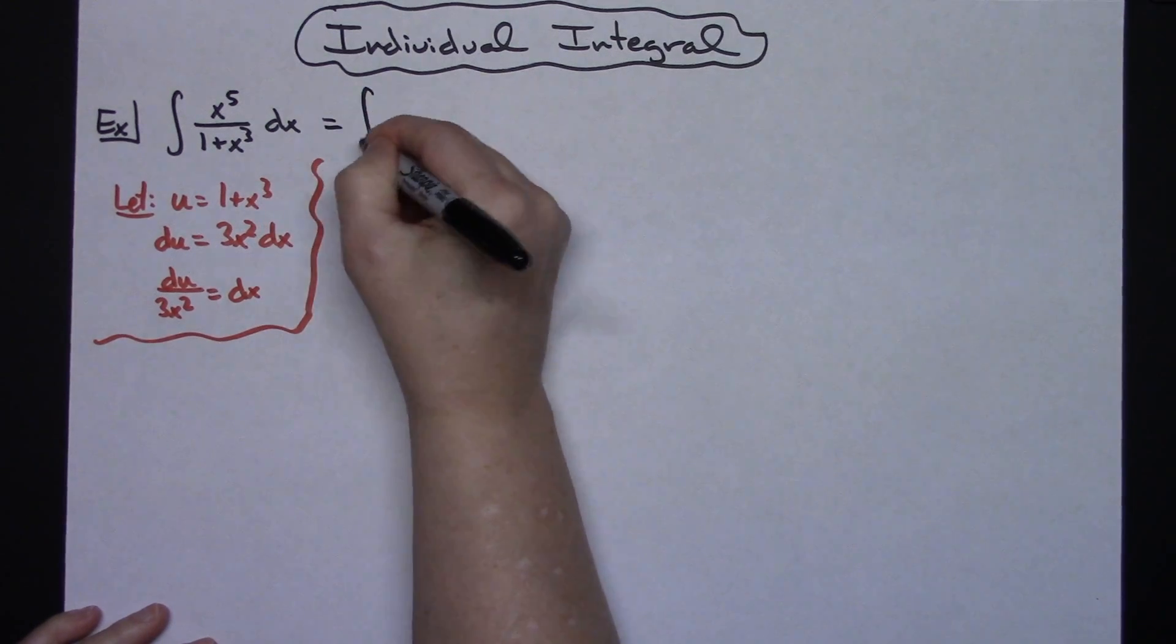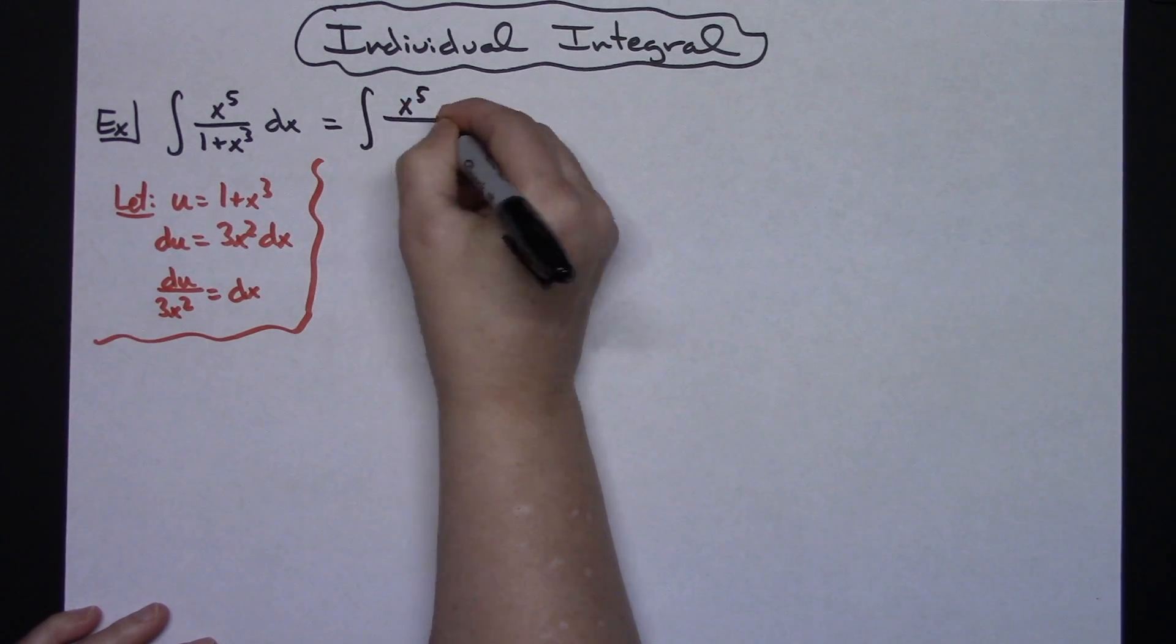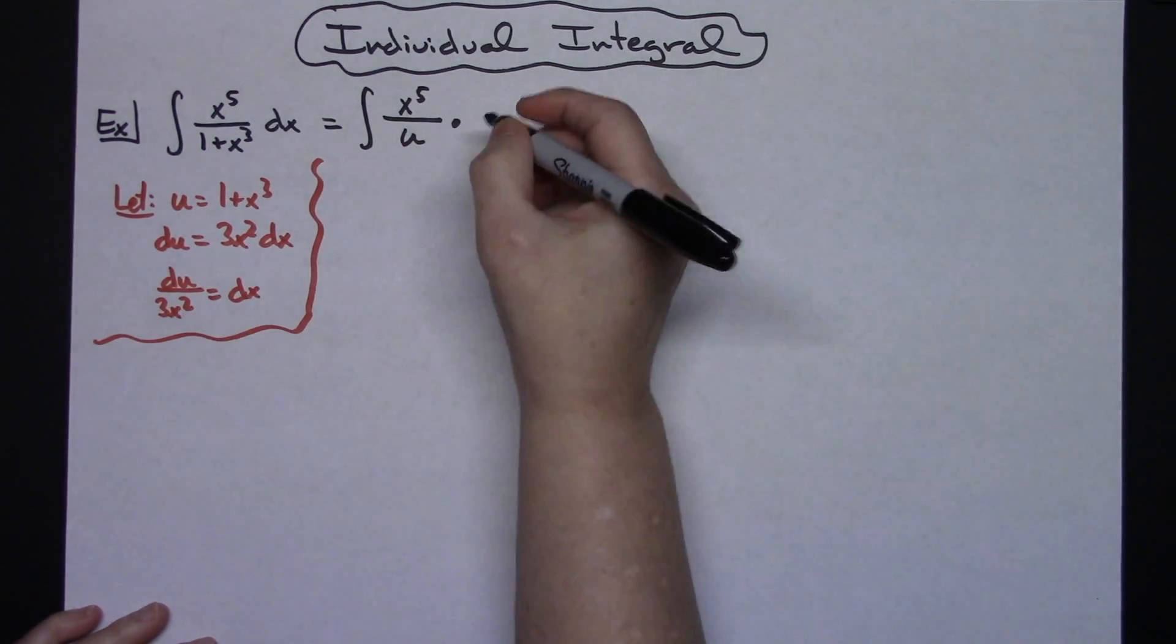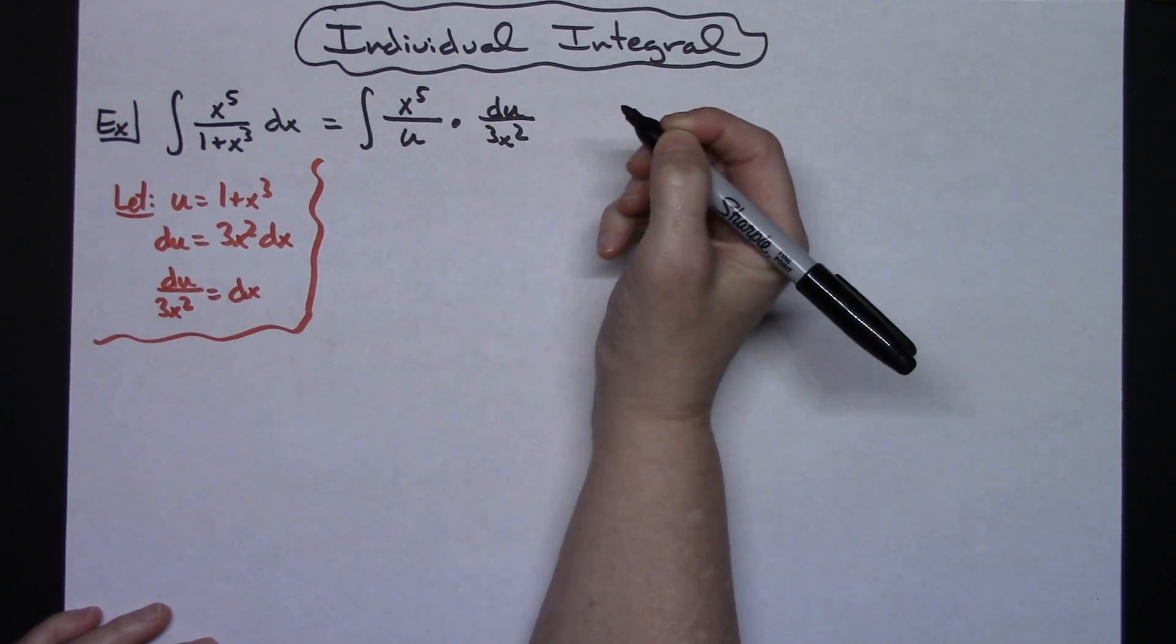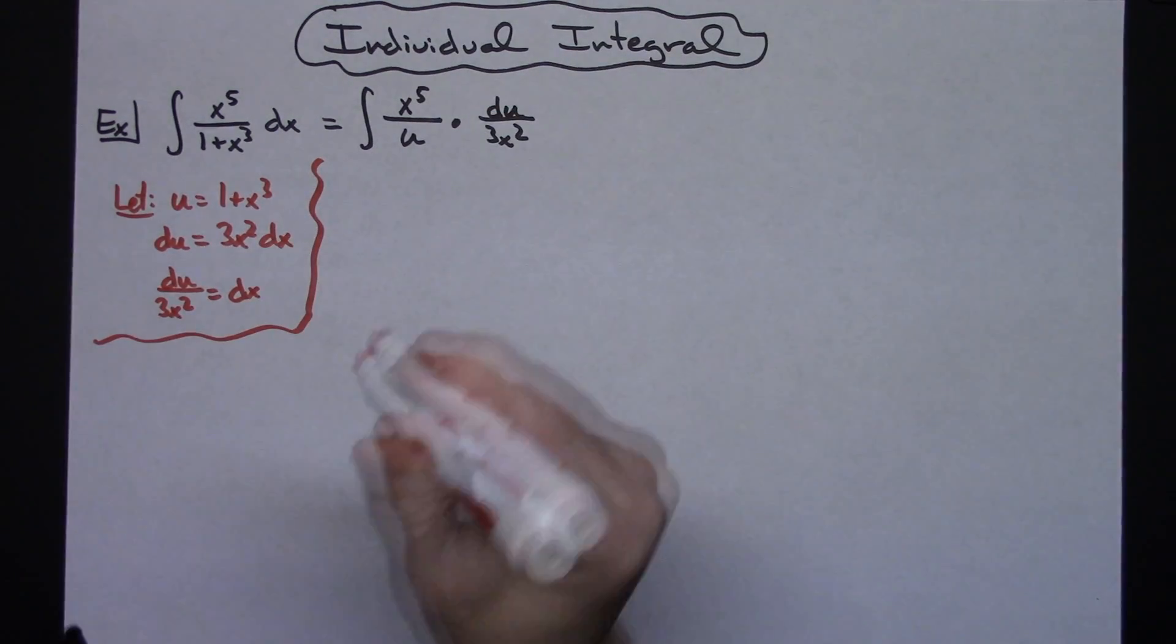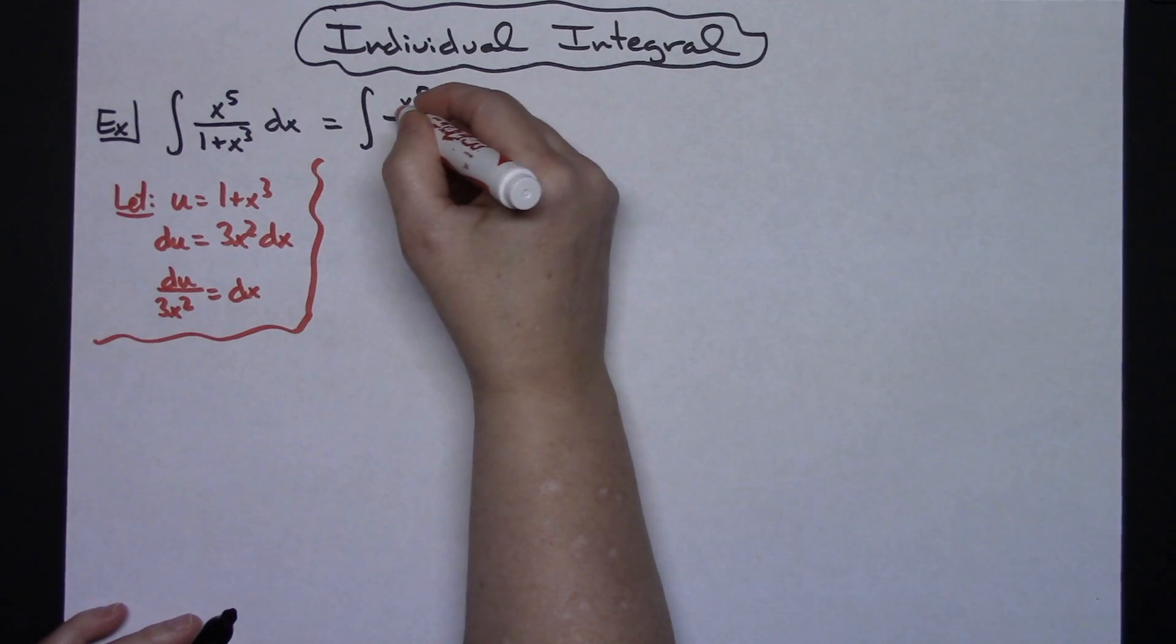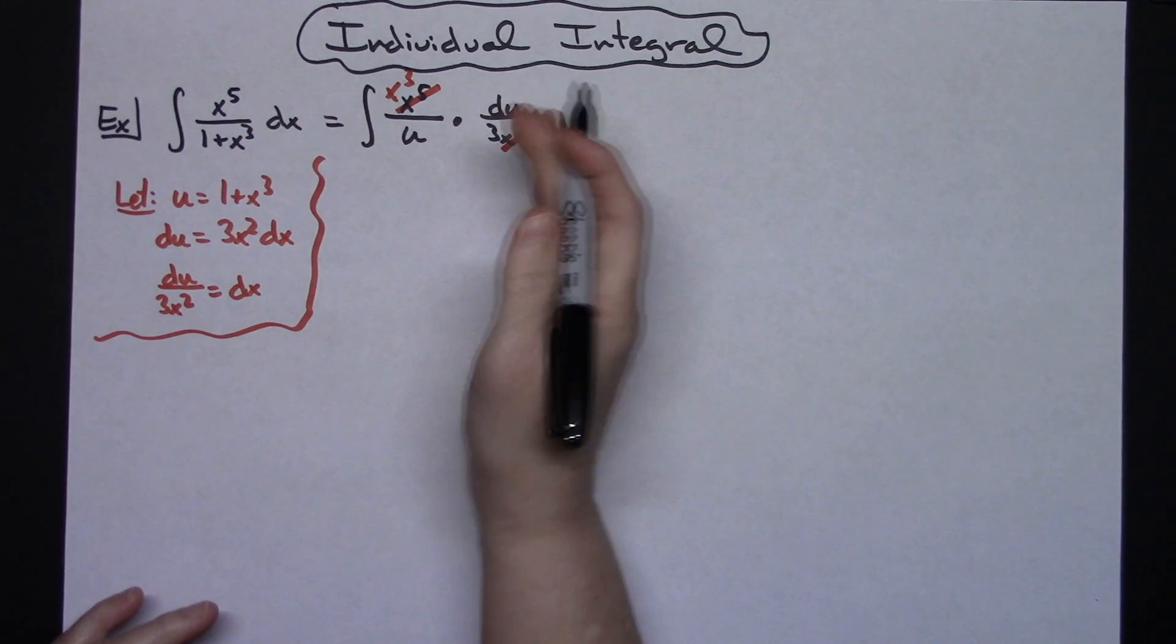You're going to come back up to that original integral and then you're going to start making substitutions. I'm going to leave that x to the fifth right there. The 1 plus x to the third is going to be replaced with u, and then I'm going to replace that dx with what it equals here, du over 3x squared. Clearly we can see 1/3 is going to need to be pulled out. I've got x squared and x to the fifth in the top, so I can cross out x squared here. That's going to leave me with an x to the third there in the top.